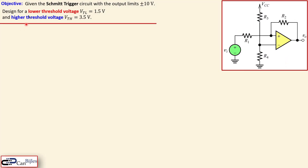We have here the Schmitt Trigger circuit which has an output limit of plus or minus 10 volts at the output. You see here that we have four resistors R1, R2, R3, and R4. The input is applied through the resistor R1 at the non-inverting input, so that is a non-inverting Schmitt Trigger. In addition to the previous non-inverting Schmitt Trigger example with symmetric threshold voltages, we now have two additional resistors R3 and R4 to create asymmetric threshold voltage levels.